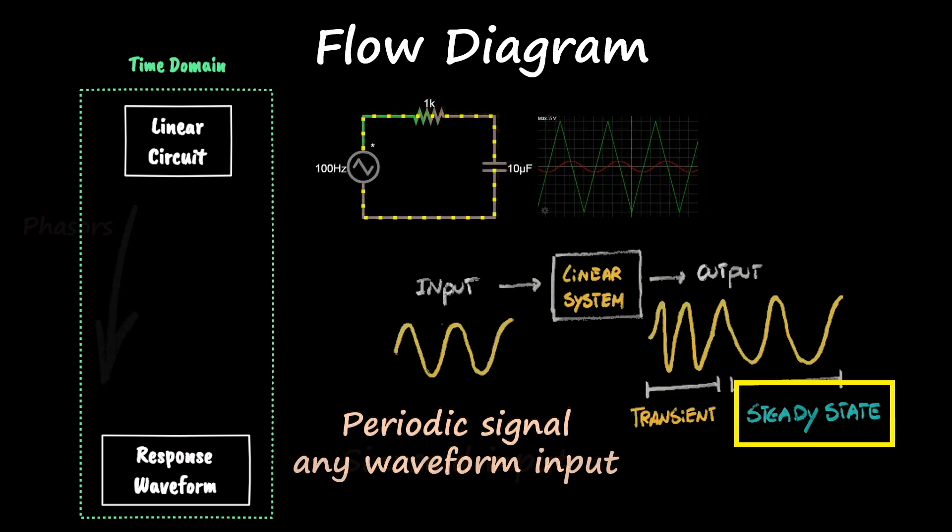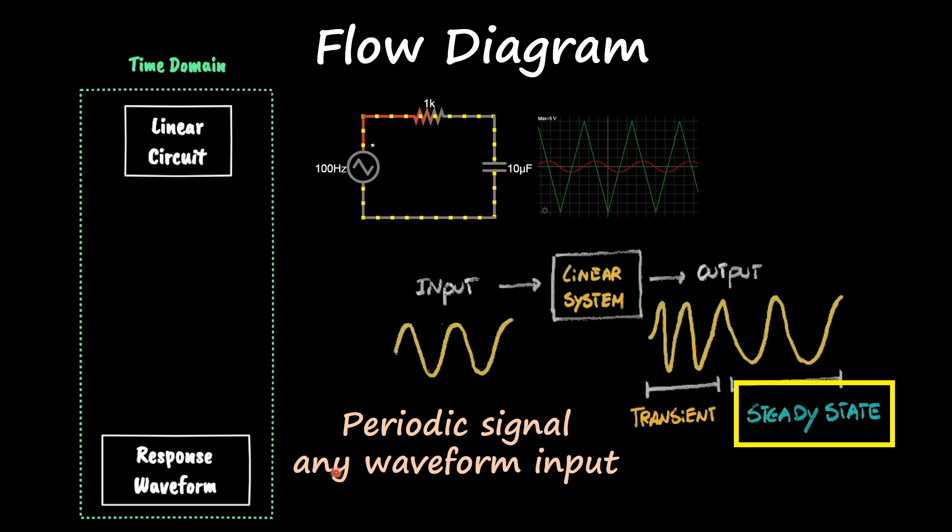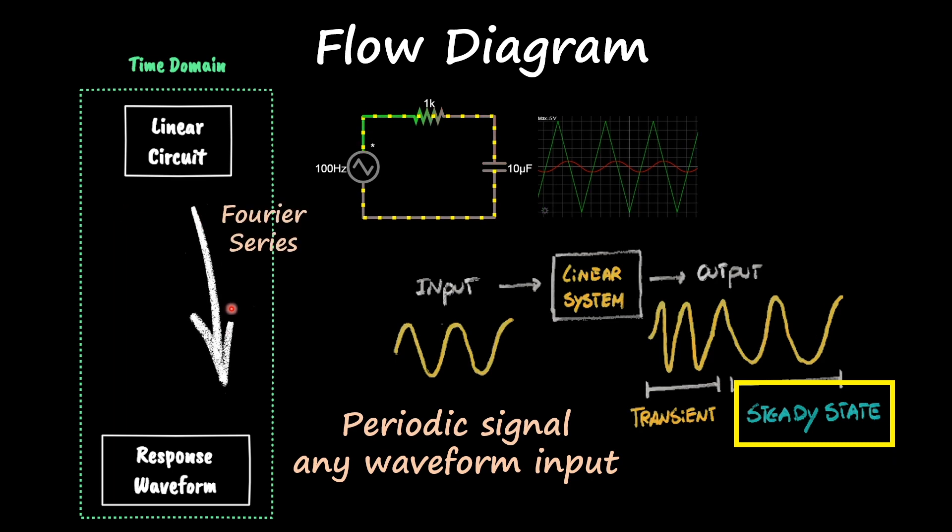If that input is a periodic signal, but any type of waveform, so triangle wave or a square wave or any type of wave, combination of multiple sinusoidal functions, then in that case, we use Fourier series.